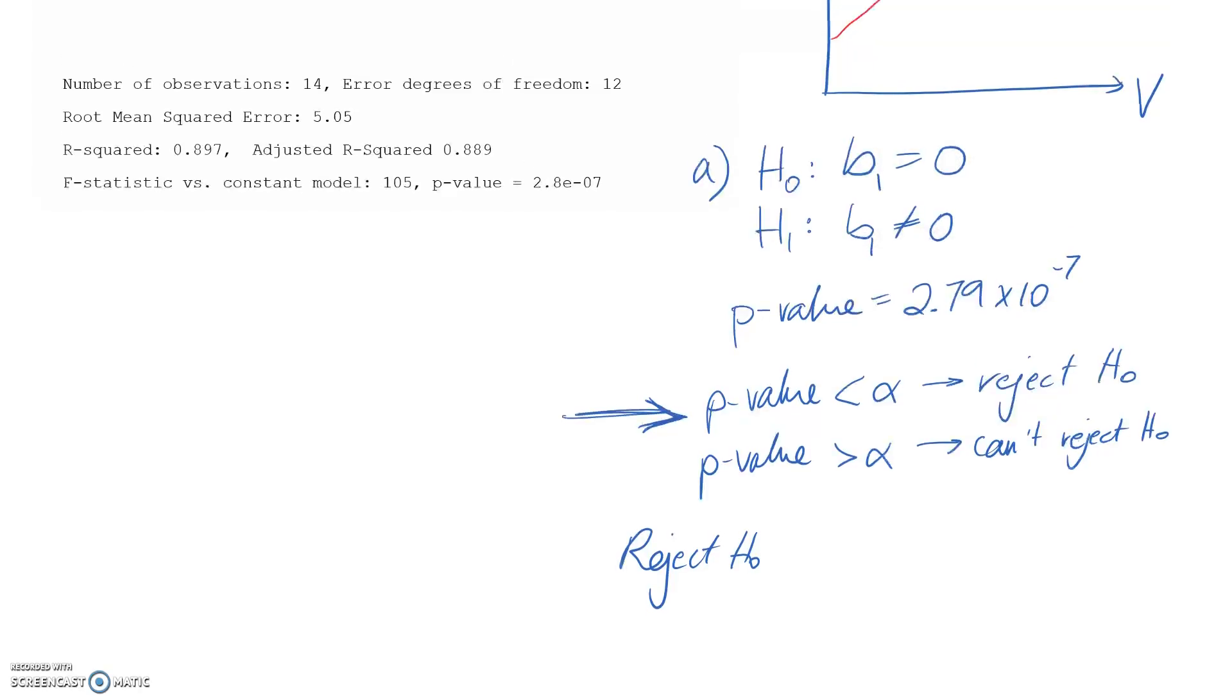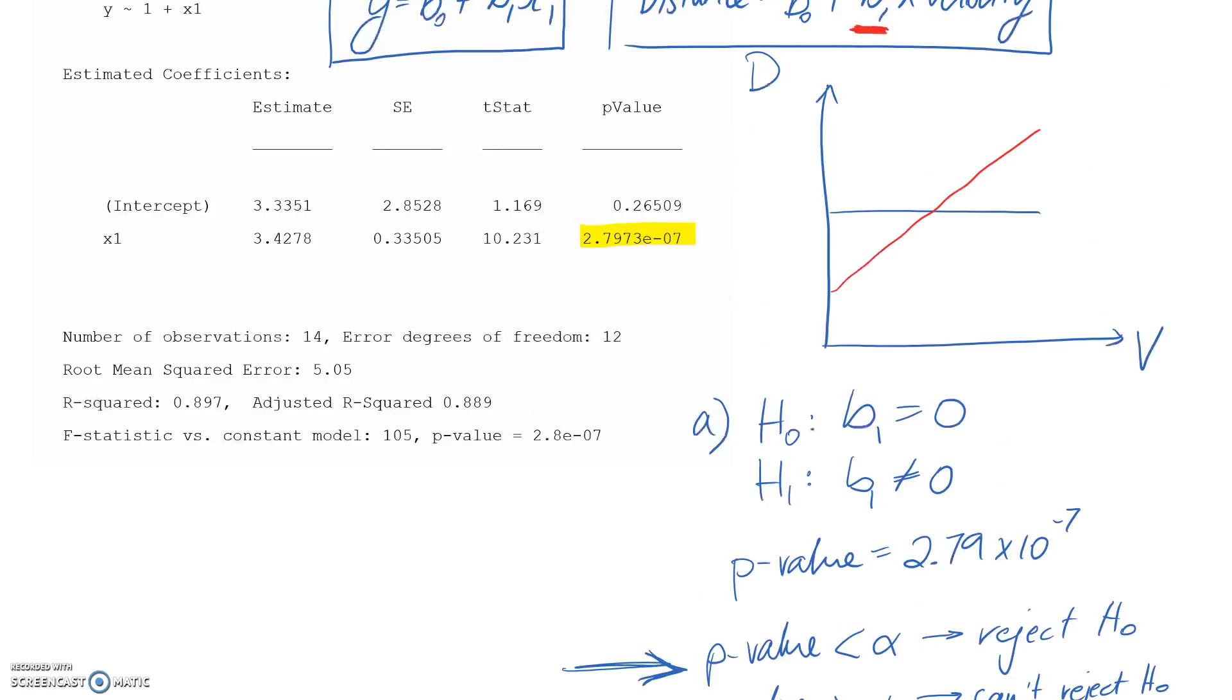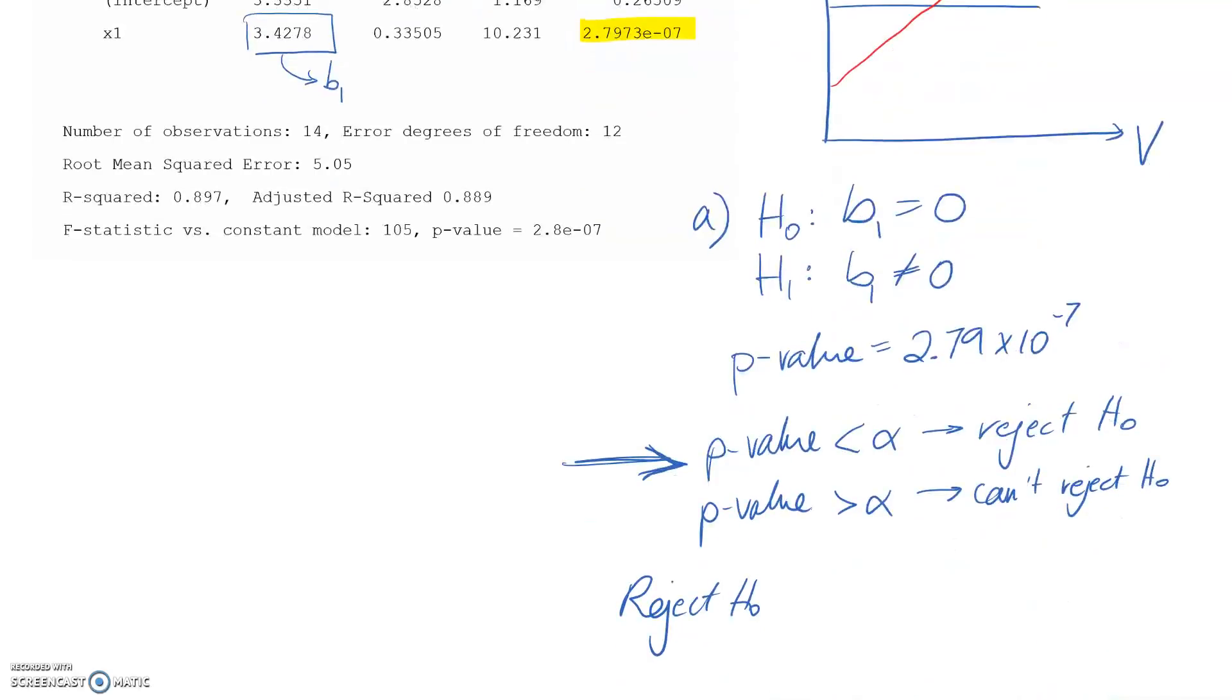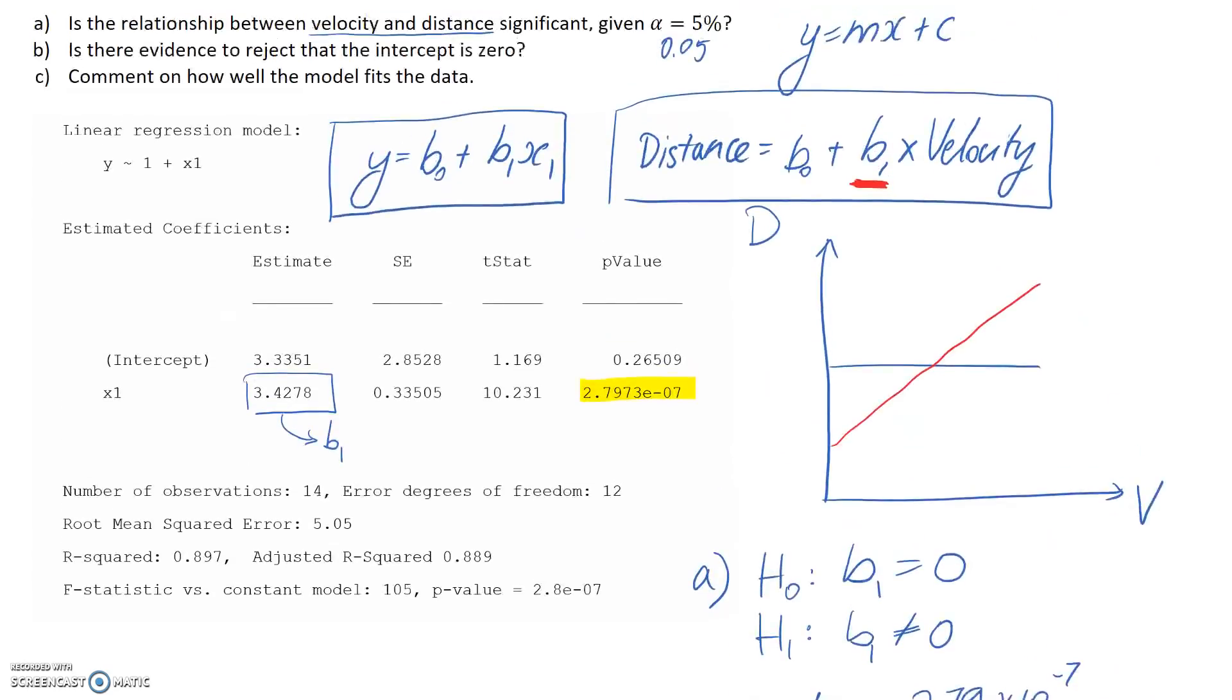Instead, b1 is definitely equal to something, and in fact, we can figure out what that is. This one here is our estimate for what b1 actually is. So what I'm going to say is we're rejecting H0, which means that there is a relationship between them. I'll put between y and x1, or in other words, between the distance and the velocity. So I'll highlight that, and let's now have a look at the next part.